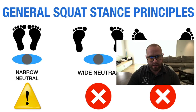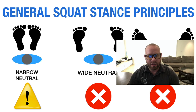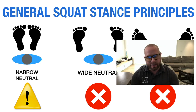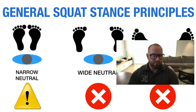An excessively wide sumo stance means nothing is really lined up well. The only reason you'd do a sumo-style squat is to take advantage of leverage with less range of motion. It may have some application for adductors, but there's usually a point where it gets too wide before even reaching a true sumo stance, and it becomes bad for the hips overall. For quad development, it's completely worthless.